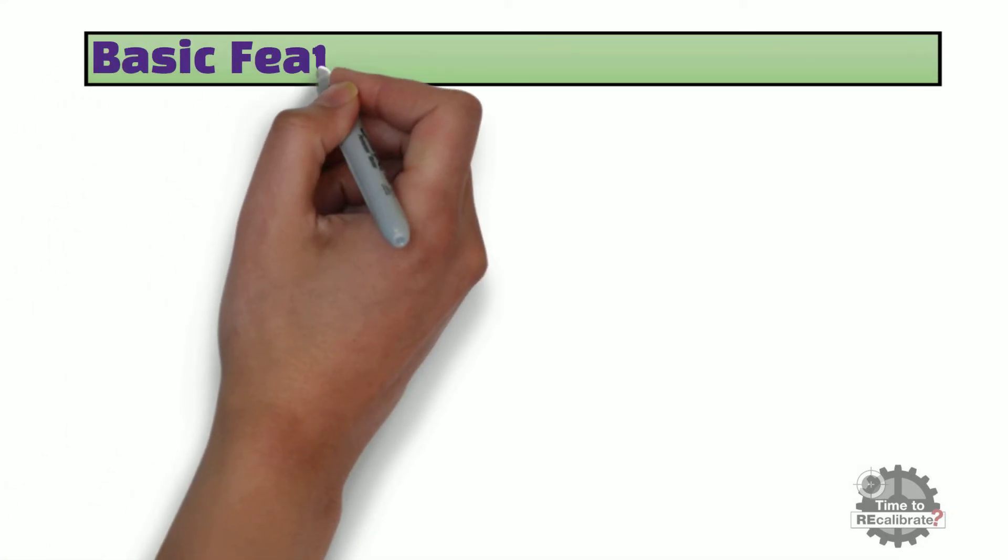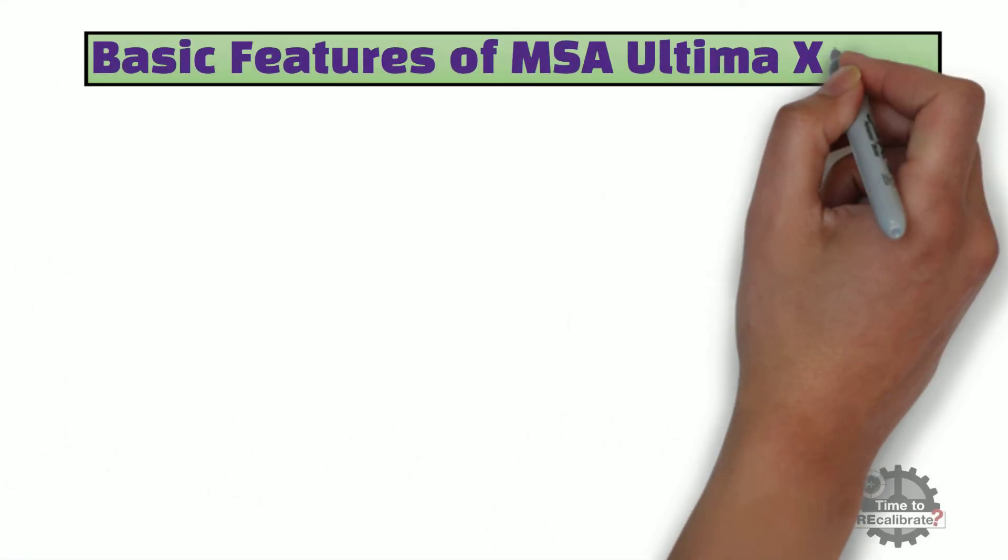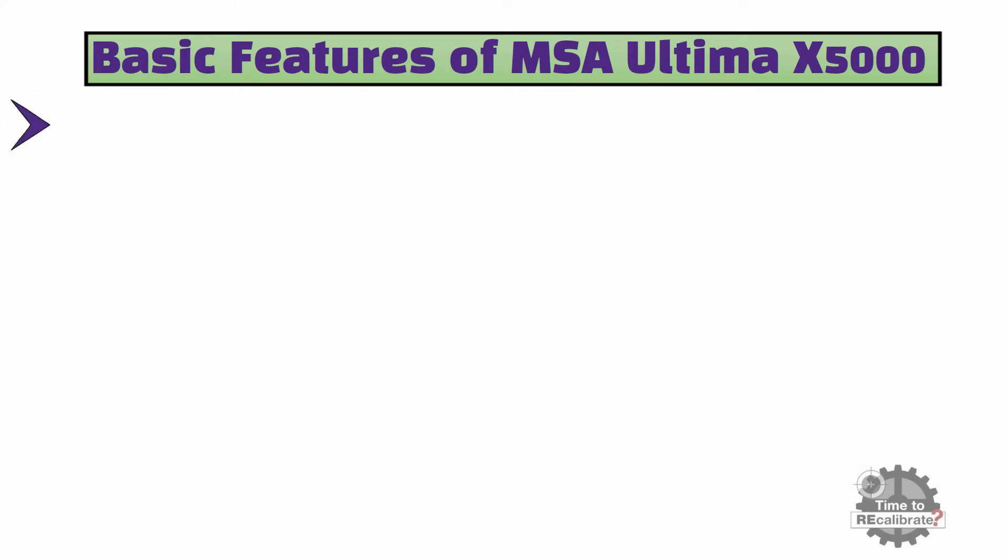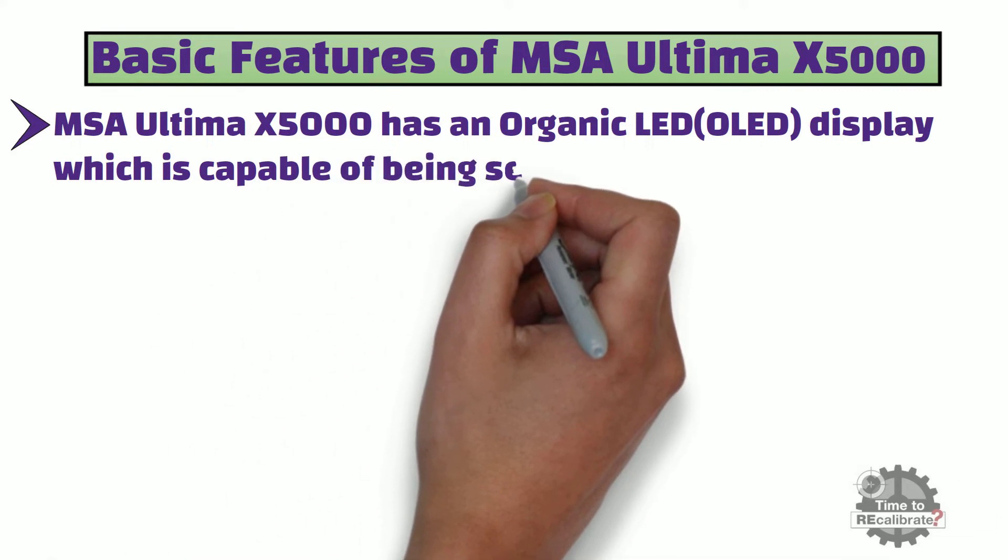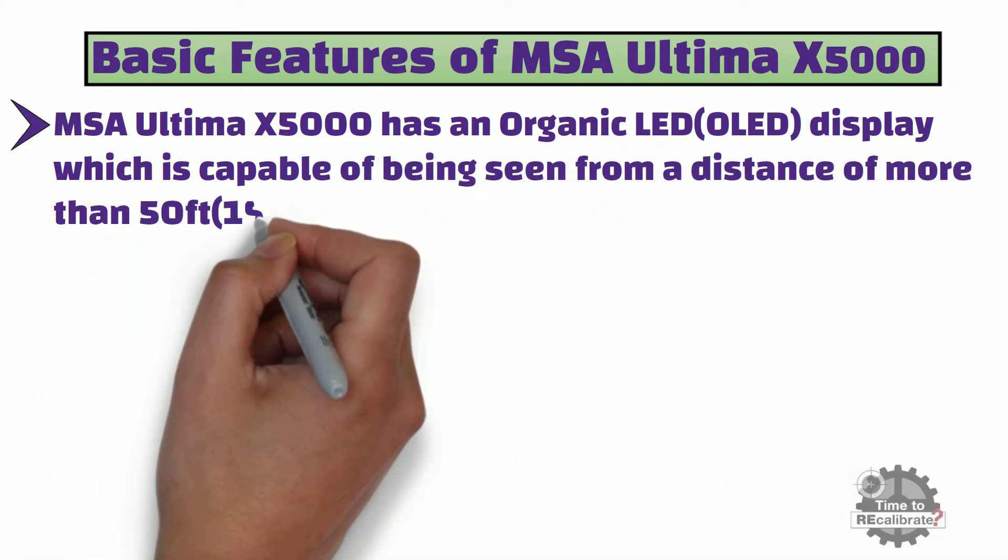Let's start with basic features of MSA Ultima X5000. MSA Ultima X5000 has an organic OLED display which is capable of being seen from a distance of more than 50 feet or 15 meters.